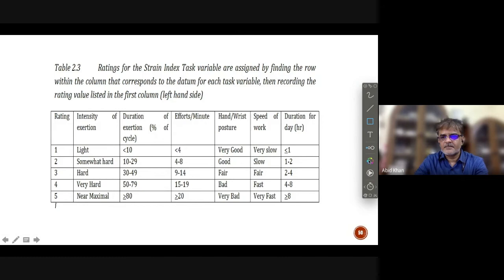They have made a rating scale for every category, every variable. There were 6 variables: intensity of exertion, as I explained to you what is the meaning of intensity of exertion.